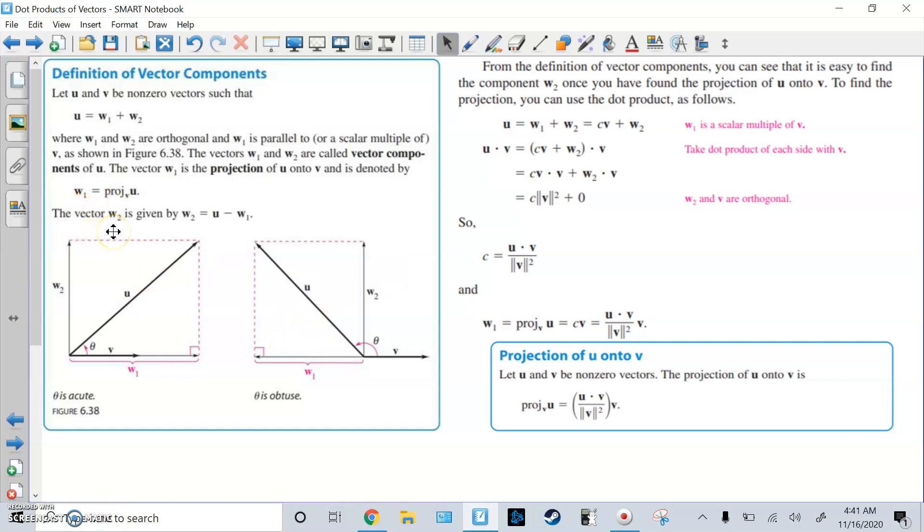But anyways, the vector W2 will be given by W2 equals U minus W1. Because remember, U is the two vectors added together. So if you know one of them, you can just subtract it to get the remaining piece. All right, so like this is right here. It's easy to find W2 once you found the projection, once you found W1.